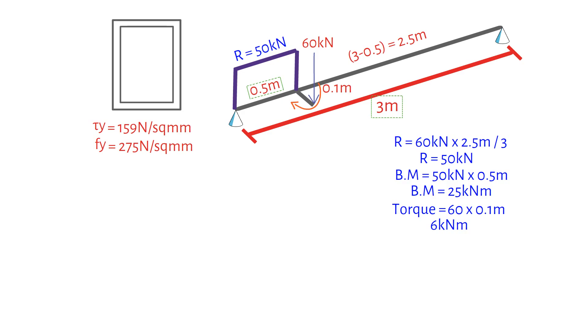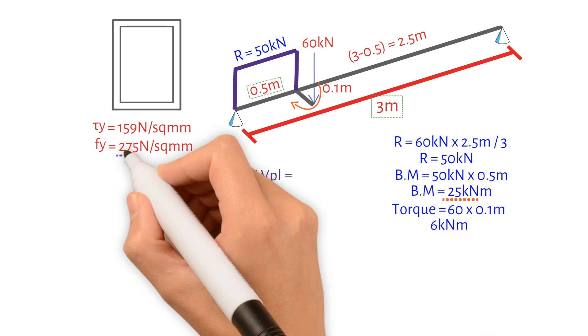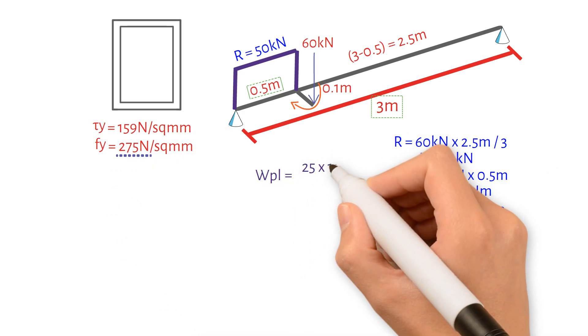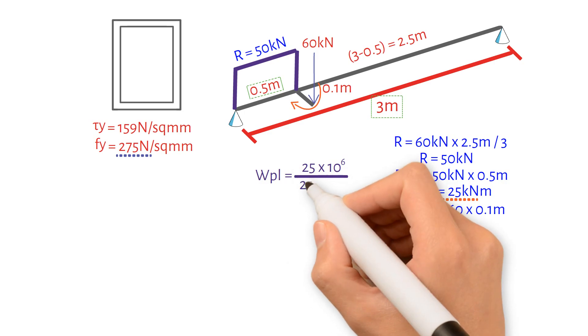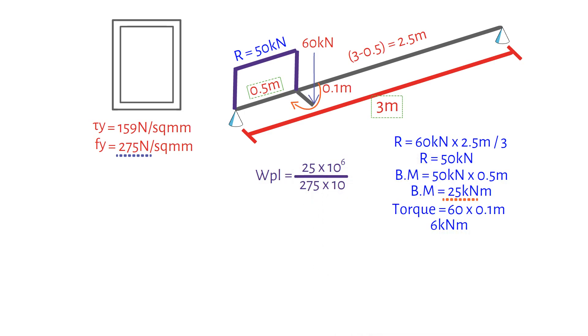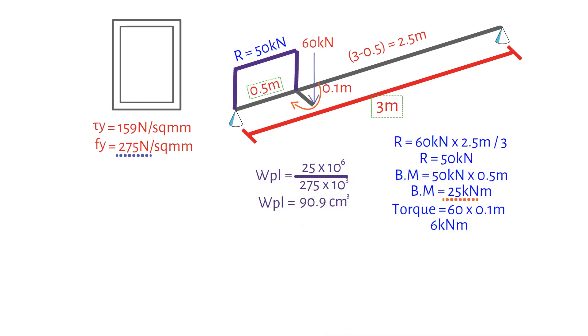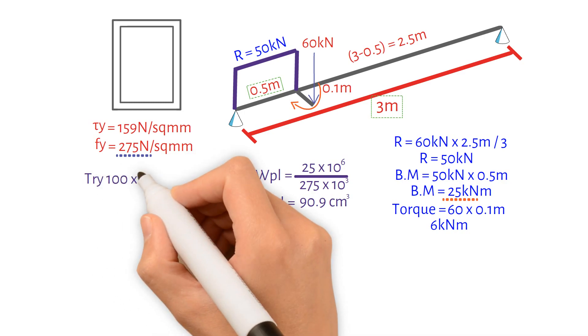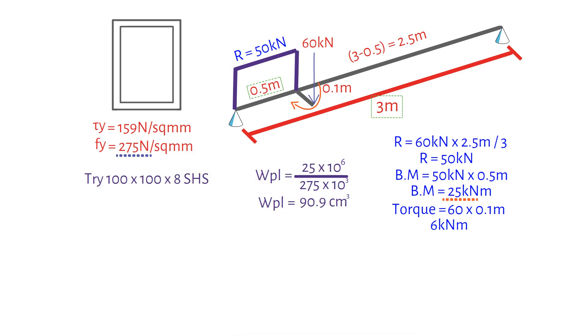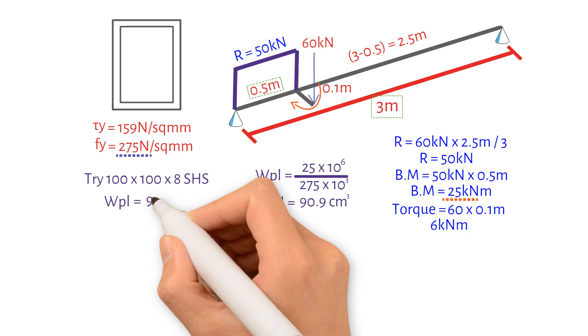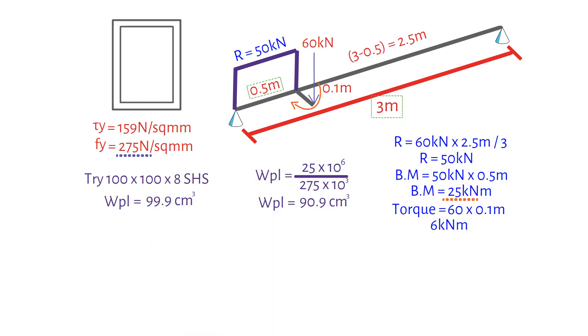We will determine the required plastic modulus by dividing 25 times 10 to the power of 6 by 275 times 10 to the power of 3, resulting in 90.9 cubic centimetres. As a suggestion, we will try a 100 by 100 by 8 square hollow section, which has a plastic modulus of 99.9 cubic centimetres.